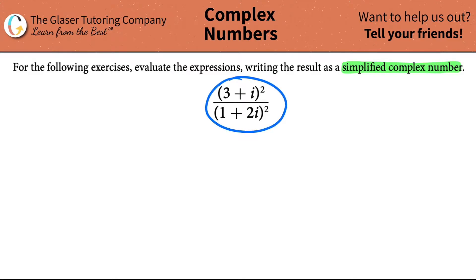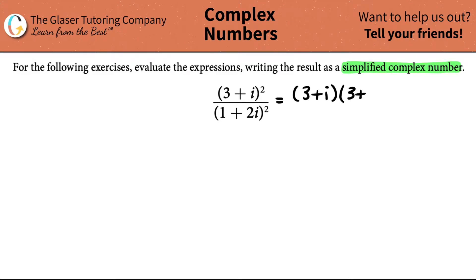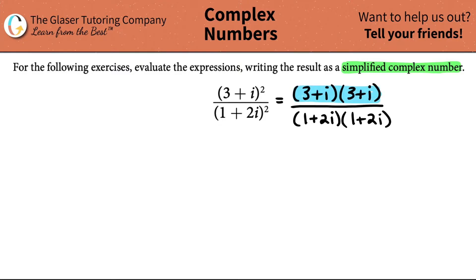So we need to simplify this into a simplified complex number. I see that I have this parenthesis and it's being raised to the second. That really means that I have two of these - two 3 plus i's being multiplied by each other. And this is all being divided by two of these as well: 1 plus 2i times 1 plus 2i. It makes clear what we're actually doing - I have to simplify the top, multiply them together to get one value, and then simplify and multiply the bottom. So we've got to work in parts.